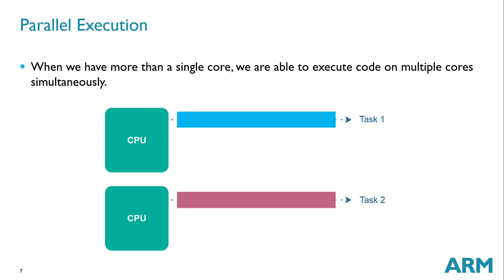Now what is parallel execution? Parallel execution basically means you have dual or multiple cores and each core is able to execute code on its own specific hardware. Since each CPU has its own processing capability, I can run multiple tasks in parallel — that is what we call parallel execution.